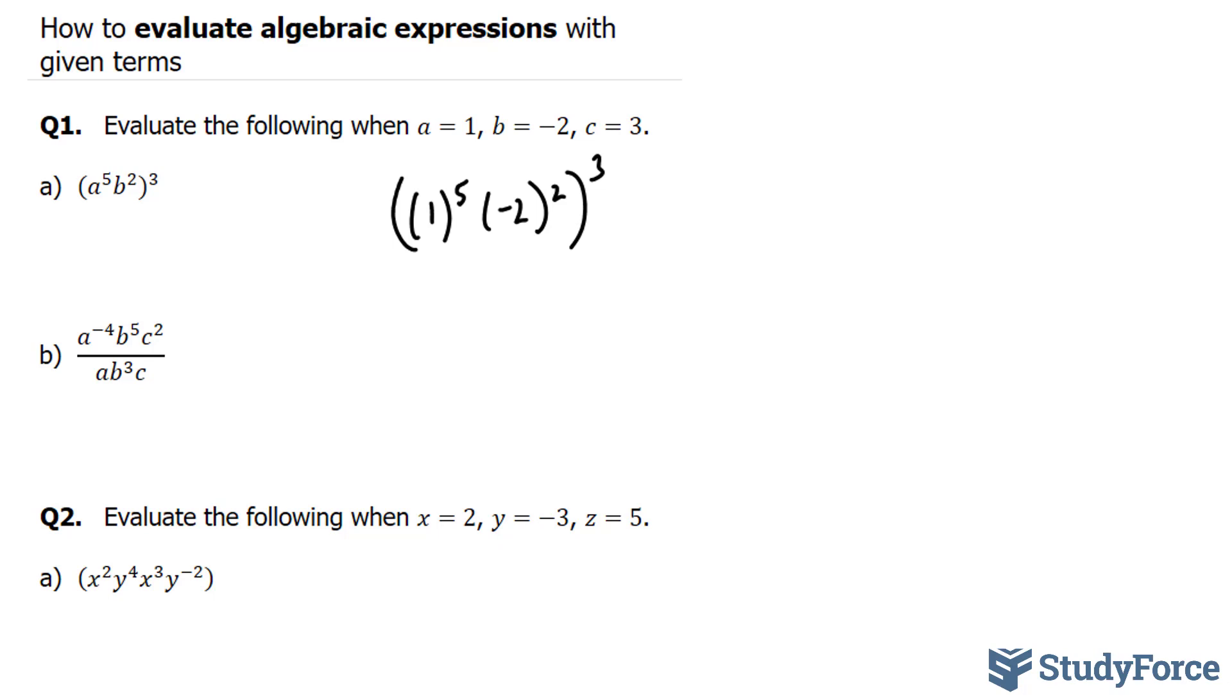Now notice that when I substitute the numbers into their respective letters, I am enclosing these numbers by brackets. That is good practice, and it's suggested that you do the same. So let's do this. 1 to the power of 5 is 1. So this part right here simplifies to 1. And negative 2 to the power of 2 is equal to positive 4. Notice that I've shown that 1 and 4 are being multiplied by this dot, and that is being powered to 3.